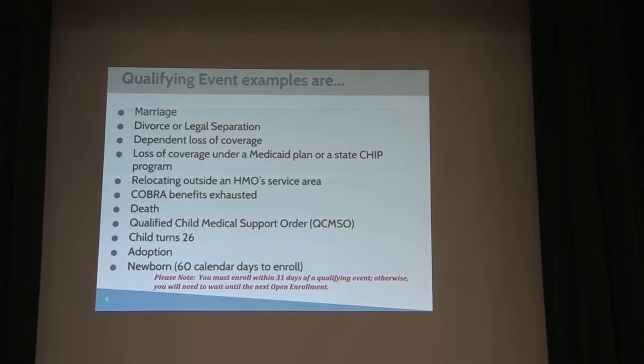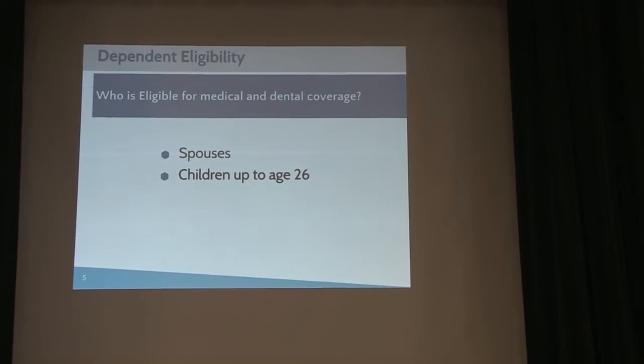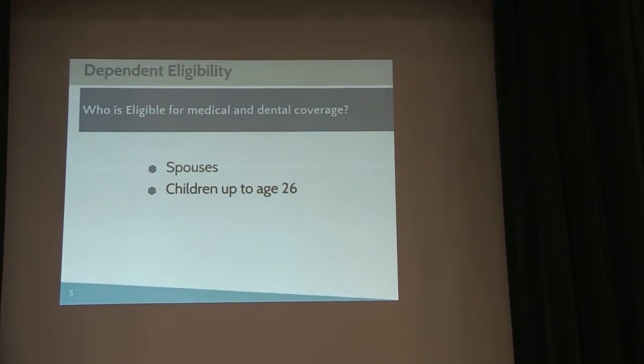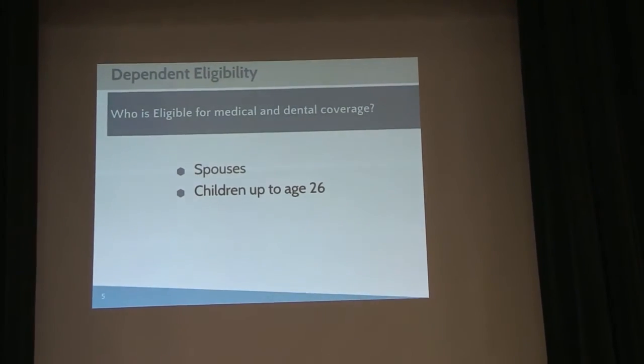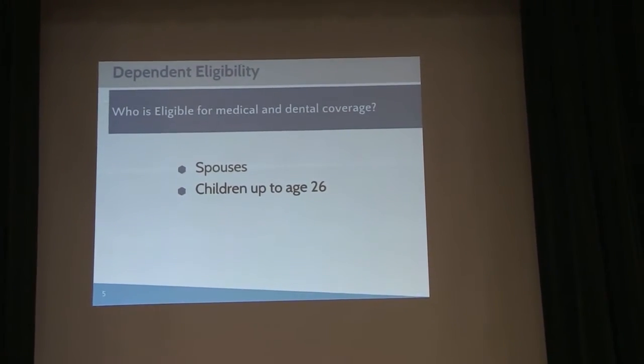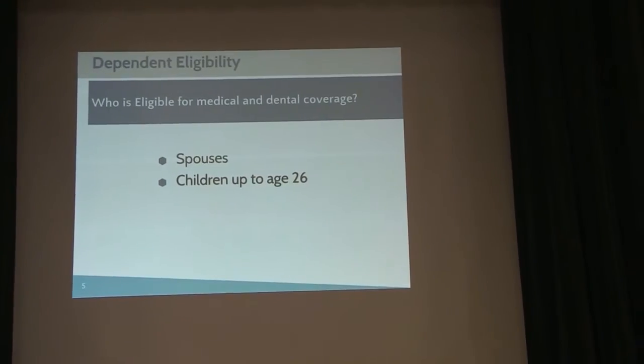Who is eligible? You can enroll your spouse in the plan and you can also enroll children up to age 26. That's part of the Affordable Care Act that passed several years ago. One important thing on spousal coverage is that if they have access to another plan, either through a retirement plan or through their employer, they will likely have to take a single plan through their employer, but they can be enrolled as secondary on our plan.